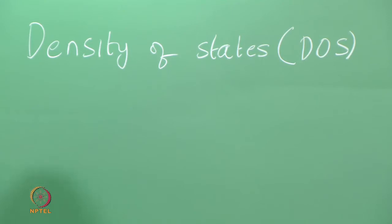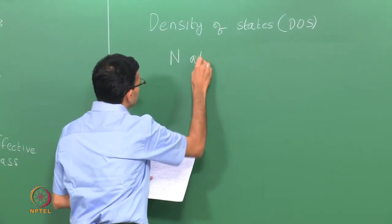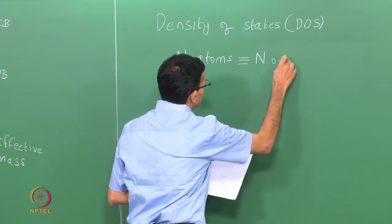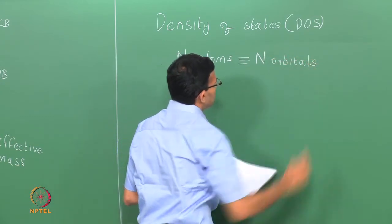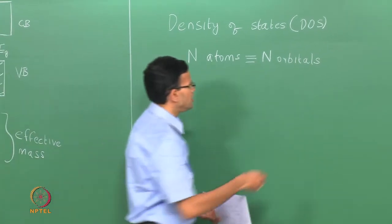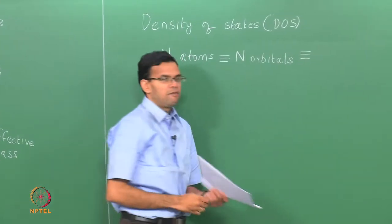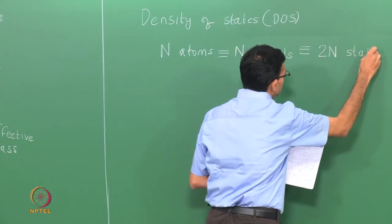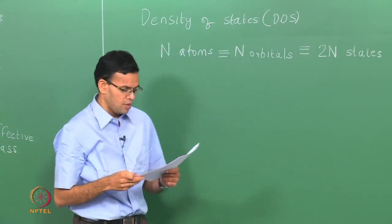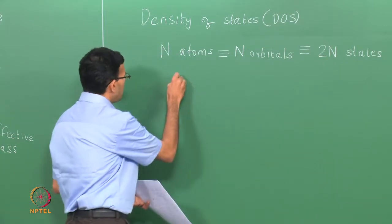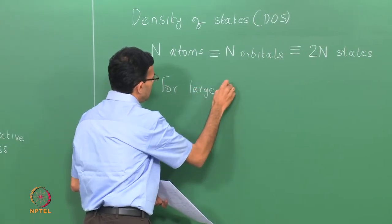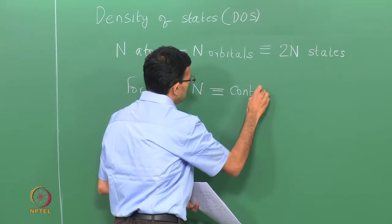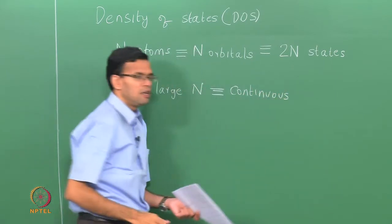Briefly, if you have a system where there are n atoms, we saw that they give rise to n orbitals. These could be atomic orbitals which come together to form molecular orbitals, and each orbital can have 2 electrons of opposite spin. So you have a total of 2n states. These states are discrete, but for large values of n, the spacing between the states is so close that we can take it to be a continuous change, and we have a band.